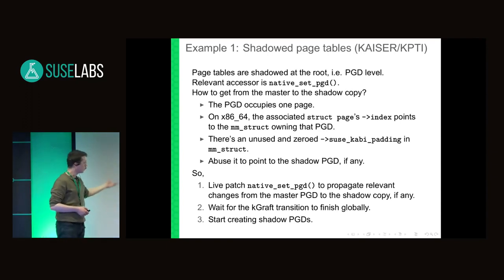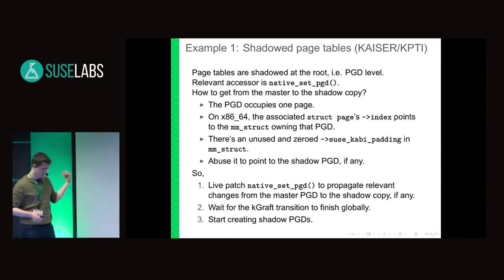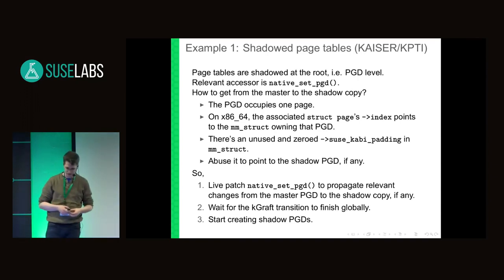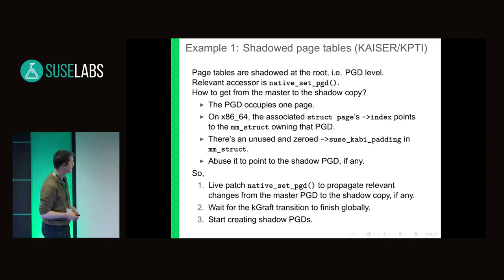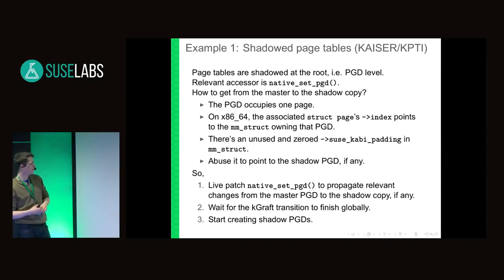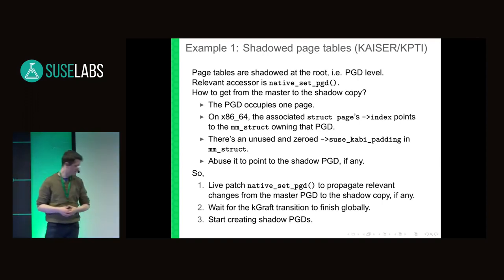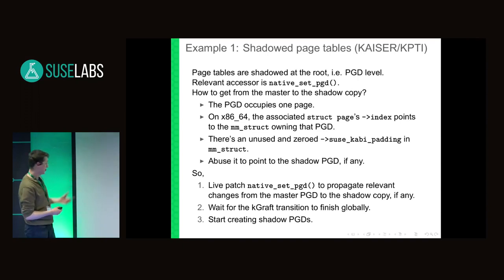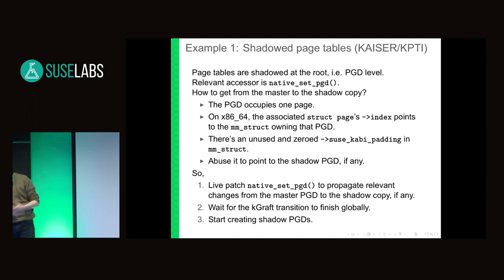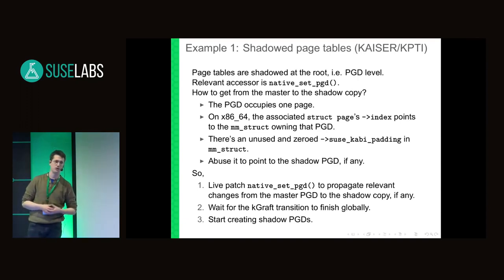So the global consistency pattern would read: live-patch native_set_pgd to propagate relevant changes from the master PGD to the shadow copy — relevant meaning user-space address mappings. Then wait for the KGRAFT transition to finish, and after that start creating shadow PGDs at task fork or wherever.